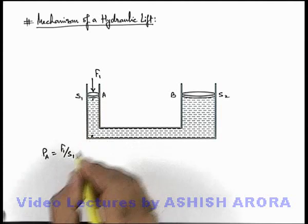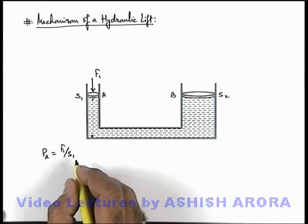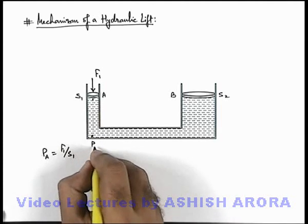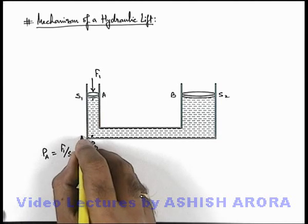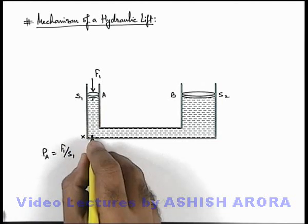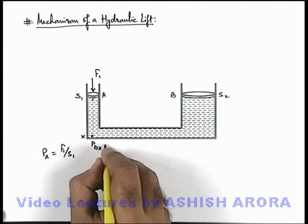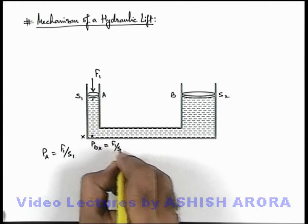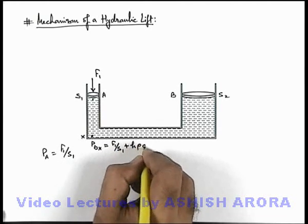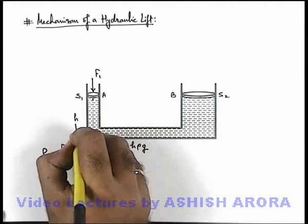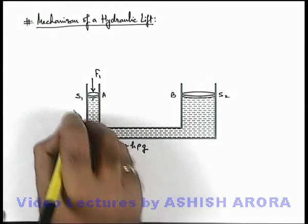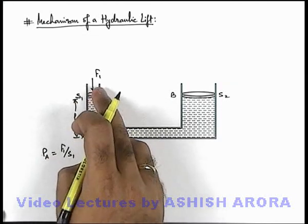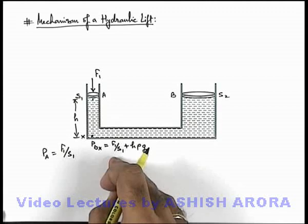If we find out the pressure at the bottom of this tube — this is point X — then pressure at the bottom at point X can be written as F1/S1 plus h·ρ·g, where h is the height up to which the fluid is filled in it and it is closed by a piston.